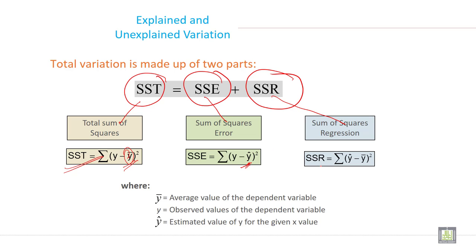And SSR is summation ŷ minus y bar whole square. Y bar is the average value of the dependent variable. Y is the observed value of the dependent variable, while ŷ is the estimated value of y for the given value of x.